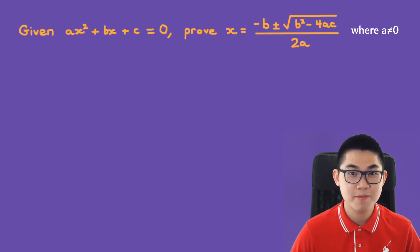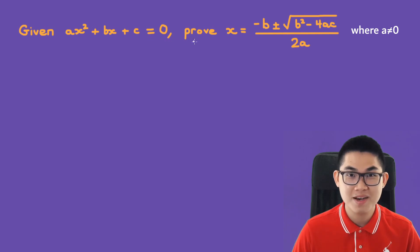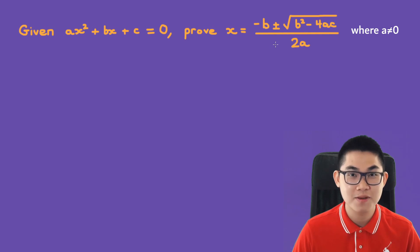In this video, I'm going to show you how to derive or prove the quadratic formula. So given a times x squared plus bx plus c is equal to 0, we must show that x is equal to negative b plus and minus the square root of b squared minus 4ac over 2a.